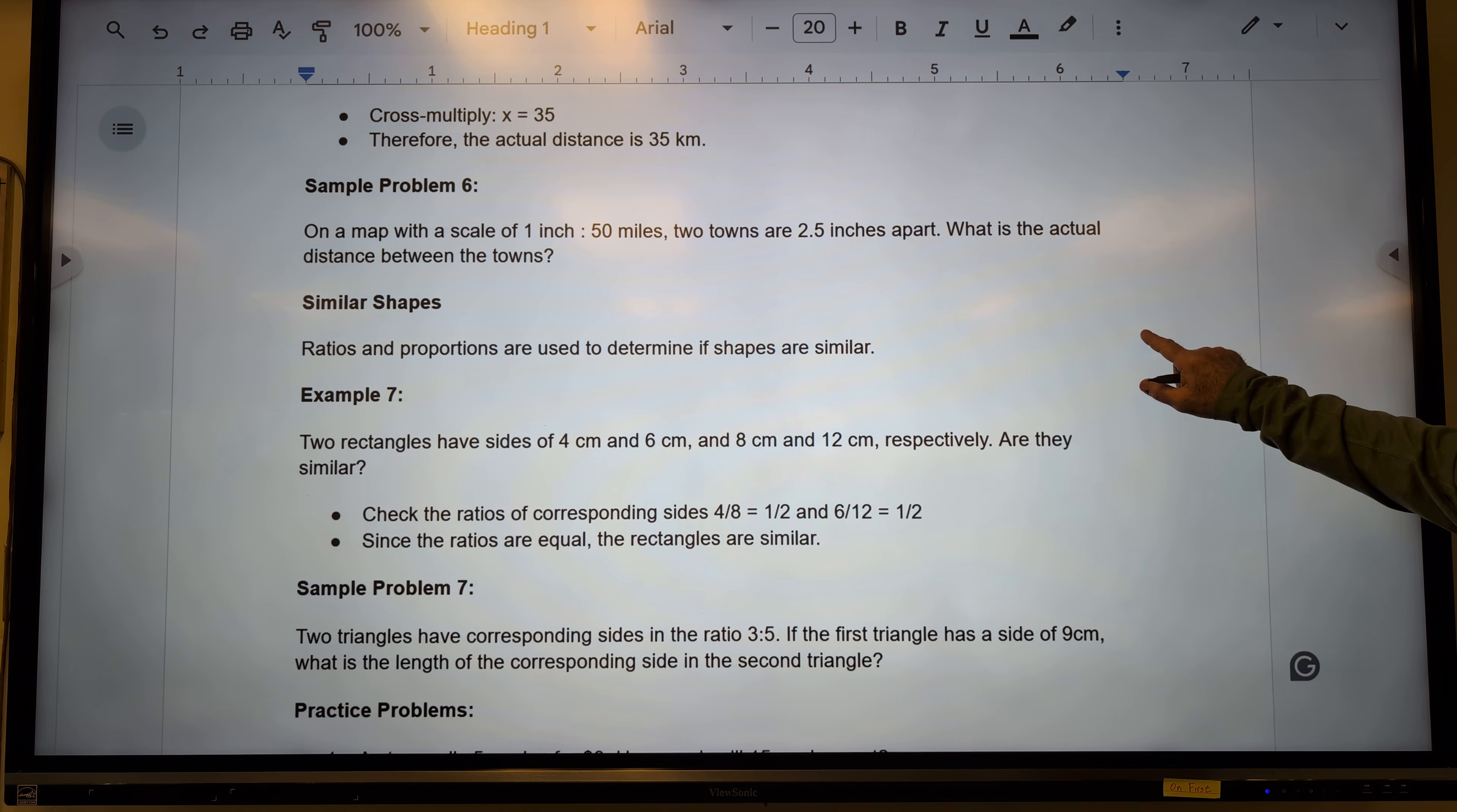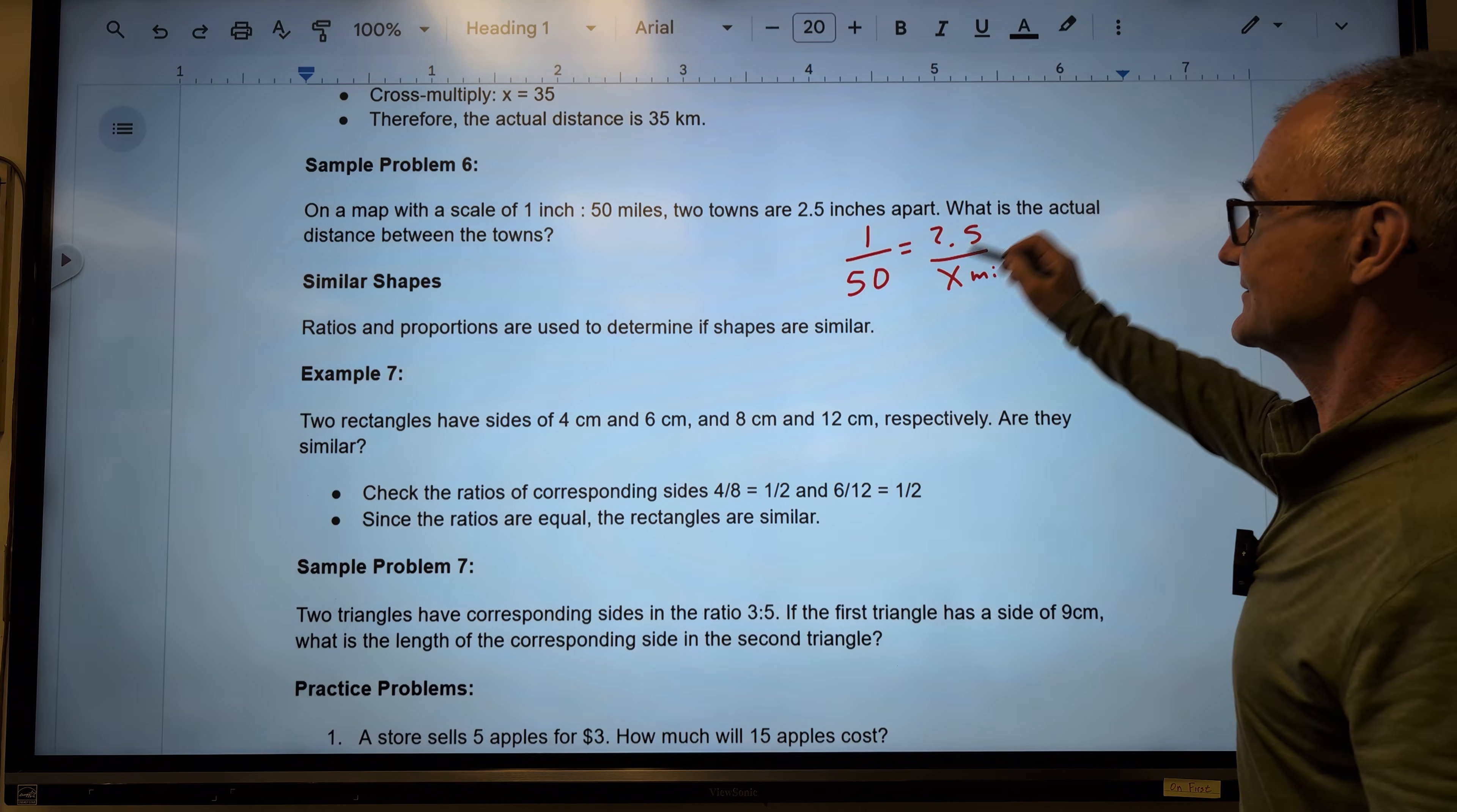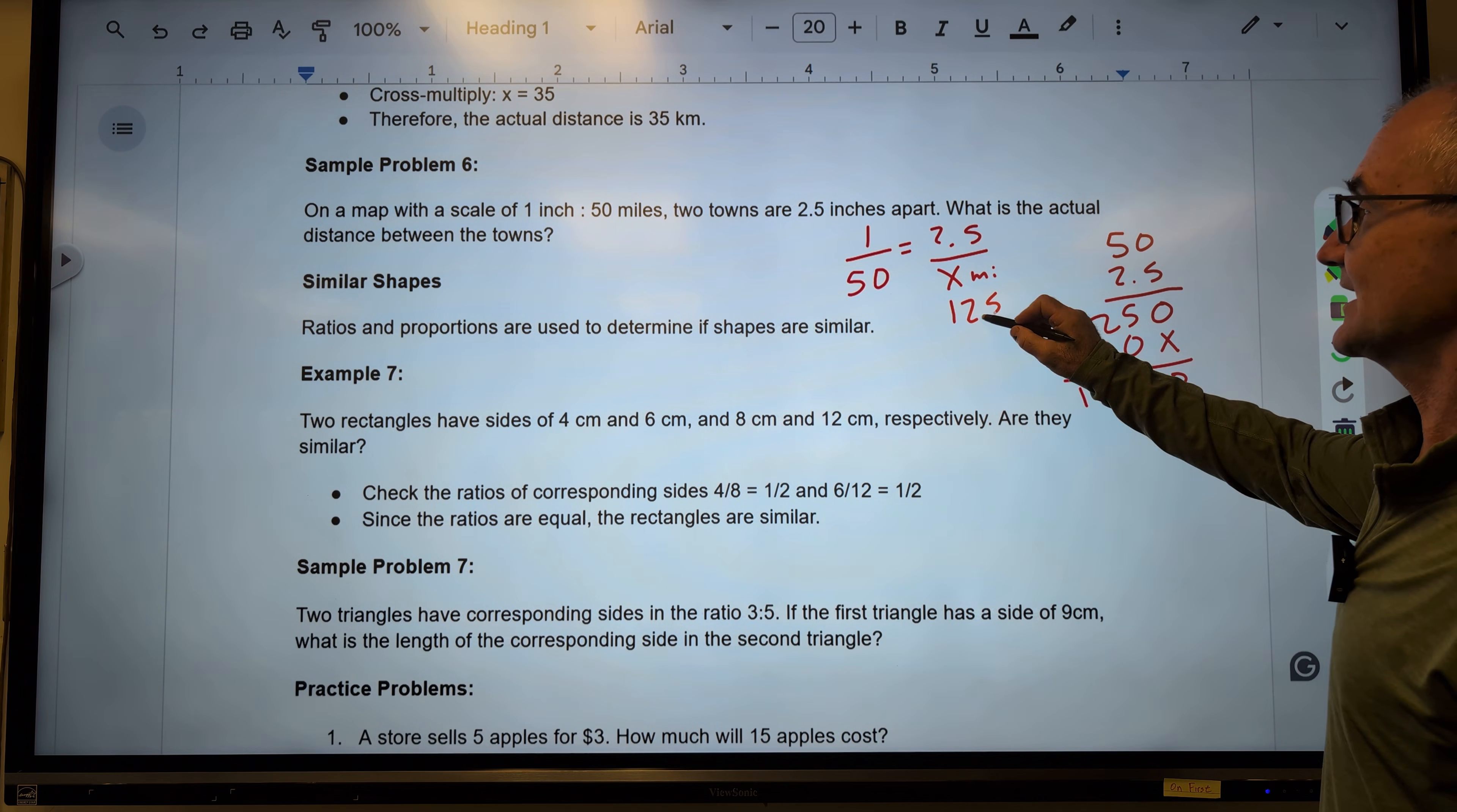Another sample problem right here. On the map with the scale of 1 inch to 50 miles. Again, inches are in the numerator, miles in the denominator. If they are 2.5 inches apart, how many miles is that? I cross-multiply 2.5 times 50. Better multiply that one out so I don't make a mistake. 0, 25. Placeholder 0, 10. 0, 5, 2, 1. I'm over one place. So if it is 1 inch to 50 miles, 2.5 inches is 125 miles.